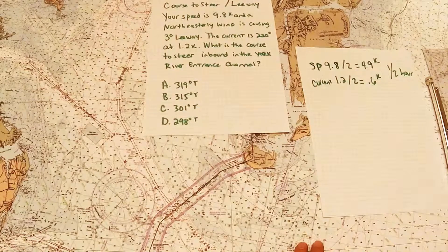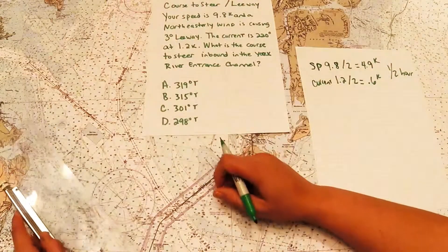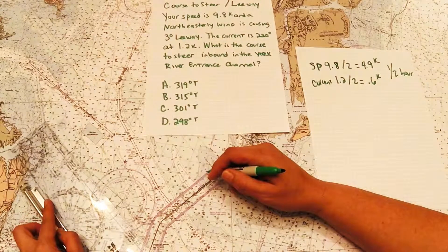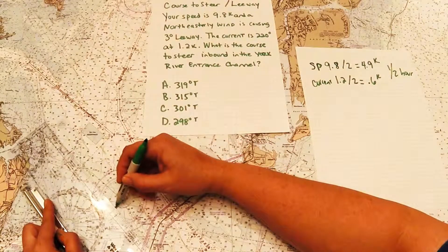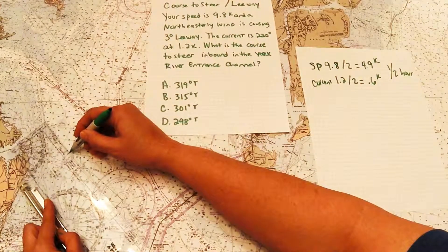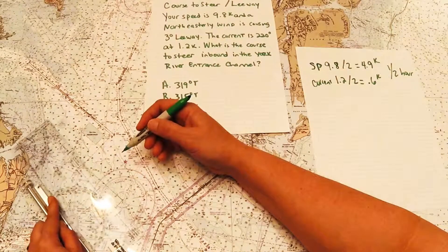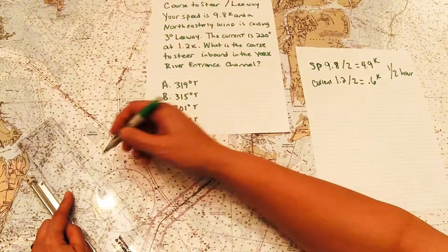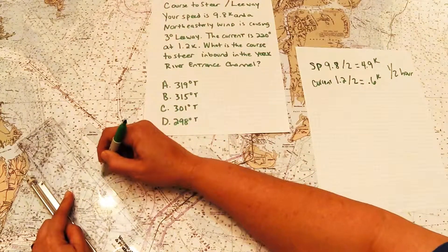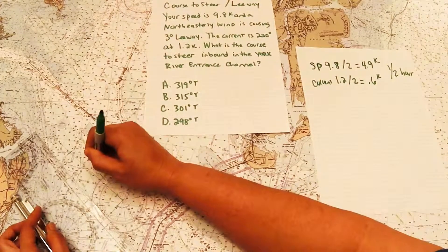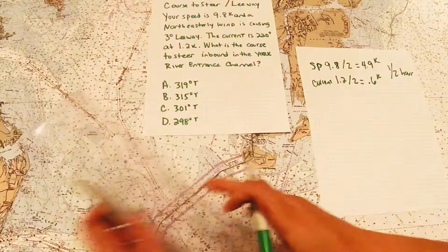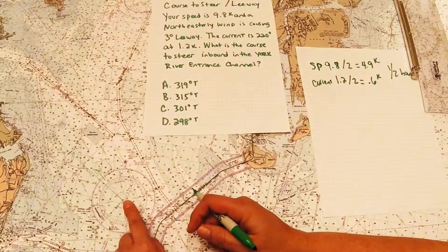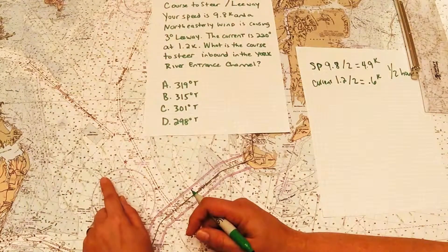Once you've got those two marks, what you're going to do is take your parallel ruler, or your weems like I'm using, and you're going to line up those two marks. So this is your set and drift mark in a half hour. This is your speed from that point in a half hour. Line them up and walk it up to the center. If you're using parallels, just walk it normal. And I'm going to mark that. And what I've got is 316. So if I was only compensating for the current, in order to make 309 good, I would have to steer 316.